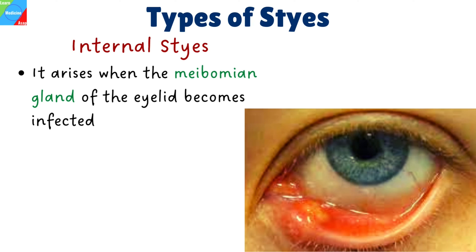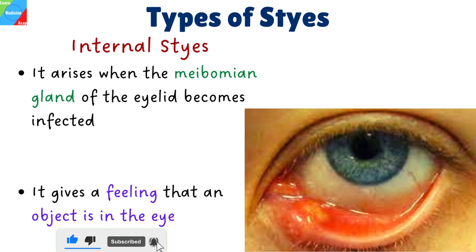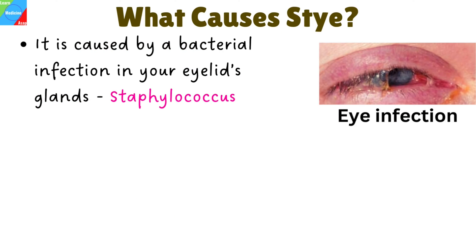Internal styes form on either of your inner eyelids. An internal stye arises when the meibomian gland of the eyelid becomes infected. This gland produces oils that help keep your eyelid moist. Generally, an internal hordeolum is more painful than an external one. Internal styes sometimes give the sensation of a lump, a feeling that an object is in the eye, and discomfort when blinking.